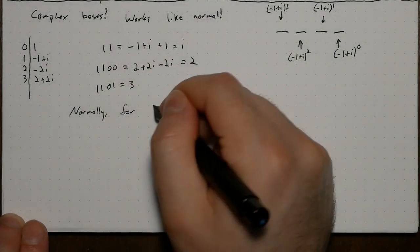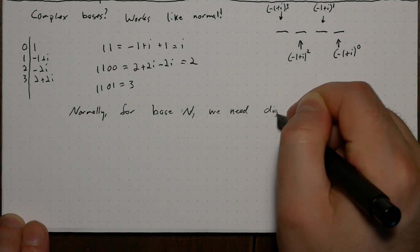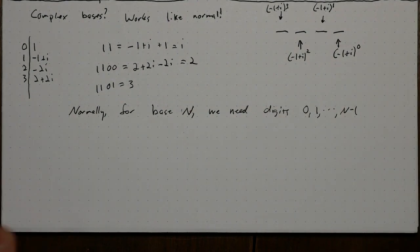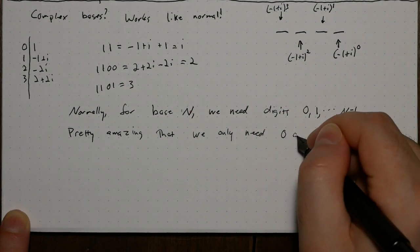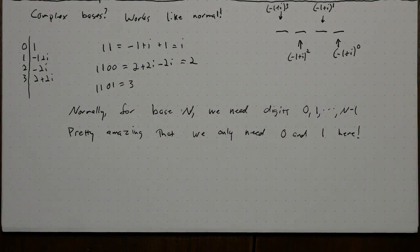Normally, for base n, you would need digits 0 through n minus 1. But it turns out, for base negative 1 plus i, you only need digits 0 and 1. So how do you find the representation of a complex number in this base?